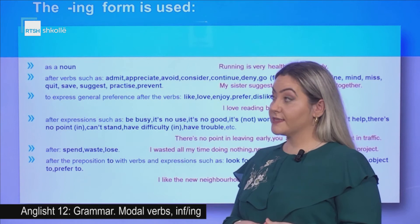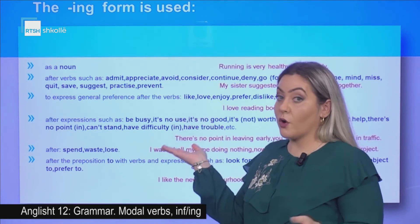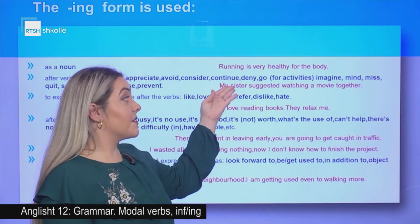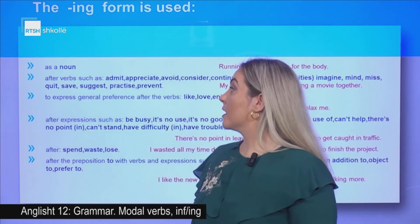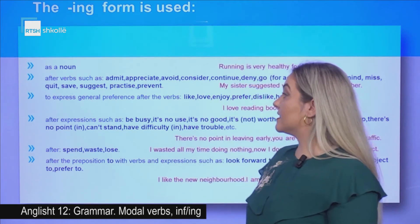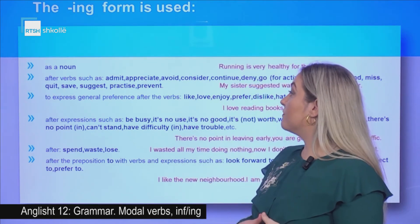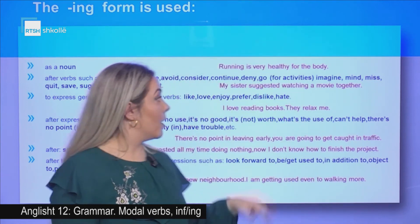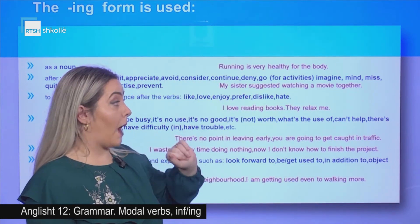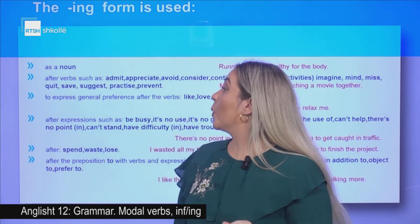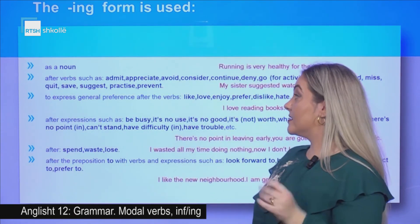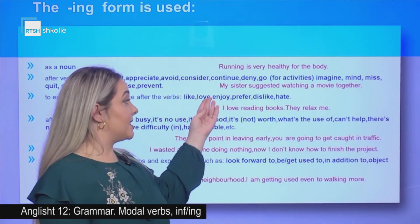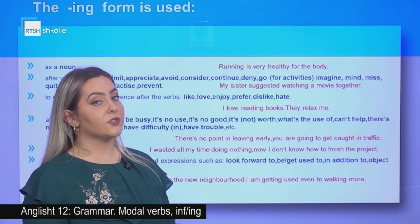The -ing form is used to form nouns or as a noun. Example: running is very healthy for the body. It is used after verbs such as admit, appreciate, avoid, consider, continue, deny, go (for activities), imagine, mind, miss, quit, save, suggest, practice, or prevent. Example: my sister suggested watching a movie together.